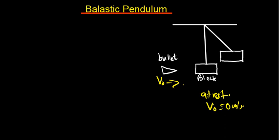What is going to happen is that this bullet is going to pass through the block, and then the bullet is going to be moving on its own with its own final velocity. At the same time, the block will also be moving on its own with its own final velocity. We can observe that this block is going to move up with a certain height, which we call h.